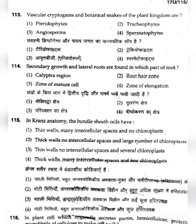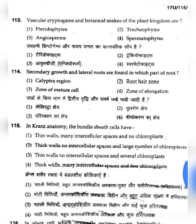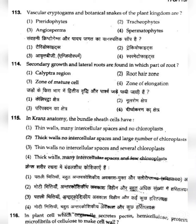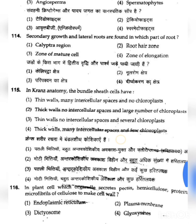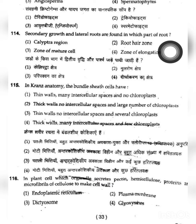Question 114: Secondary growth and lateral roots are found in which zone of the root? The root has several zones. Option 1 (collection zone) and option 2 (root hair zone) are not the answer. The third option is the zone of maturation, where cells mature and collect — and this is where secondary growth of the root begins and lateral roots originate. So 114's correct answer is option 3: zone of maturation.